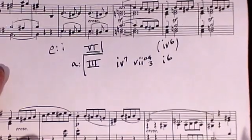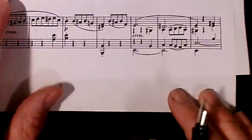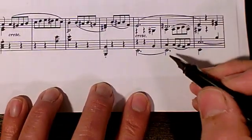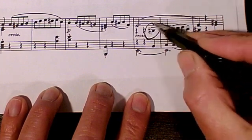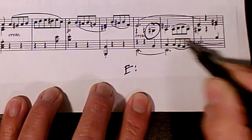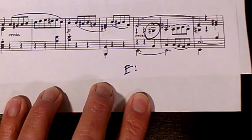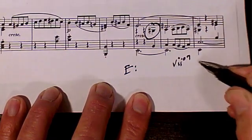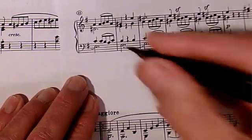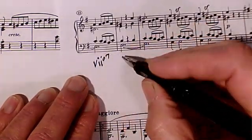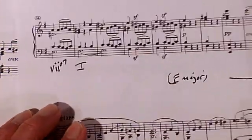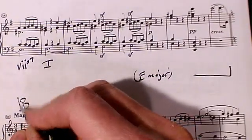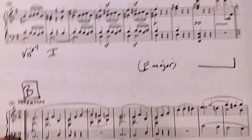By the end of this A section, Beethoven returns to E, but is intent on ending on E major rather than E minor. Notice the G-sharp pitch in measure 51 and the long cadential extension from measure 51 to measure 60 that keeps reiterating the progression VII-diminished VII to I in the key of E major. By measure 62, the large-scale A section is complete, and we're ready to move on to the Maggiore, or B section.